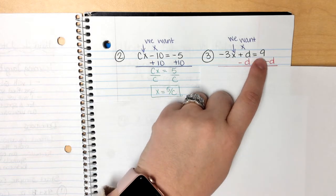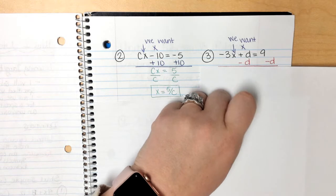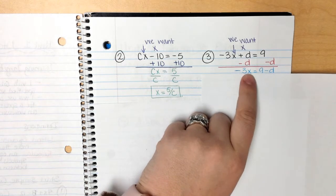Just like we talked about last time, this is 9 minus d. 9 and d are not like terms, so we're going to write them side by side.